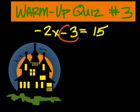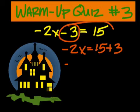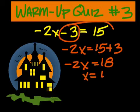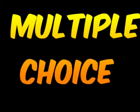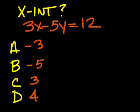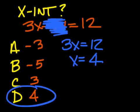Move this over and change the sign — make it plus. 15 plus 3 is 18, and divide the 18 by negative 2 to get negative 9. Multiple choice, block letter only. If you want to find the x-intercept, just get rid of the y-term and do 3x equals 12, so x equals 4, which is D.